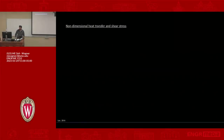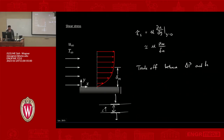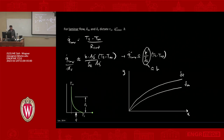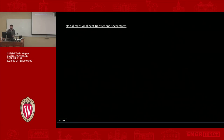Wrapping up the discussion from last time, we had gotten to a point where we came up with a general relationship for shear stress: mu times u-infinity over delta-m. That's our approximate model for shear stress. Prior to that, we developed an approximate model for h, which is conductivity over delta-t. These are relationships that depend on the boundary layer thickness. Expressing things in terms of boundary layer thickness isn't always the easiest way, so let's do a little manipulation to get back some non-dimensional parameters we can use to develop correlations.